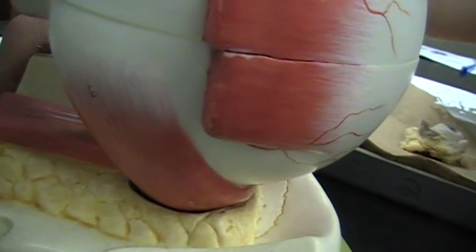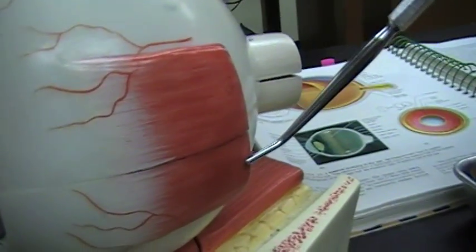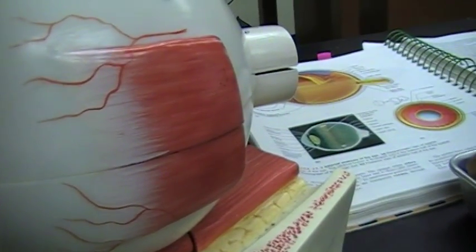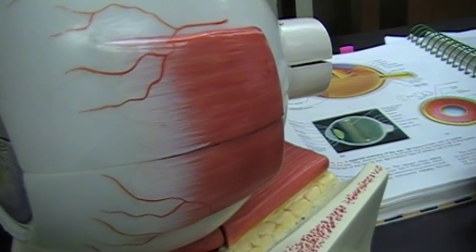And then the next muscle is this one right here, and it is called the medial rectus muscle. It moves the eye medially, and it is also controlled by the oculomotor nerve.